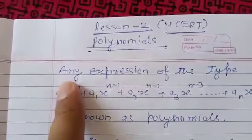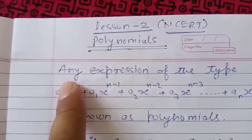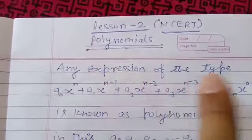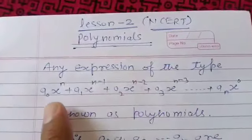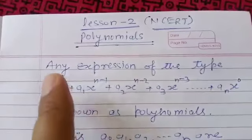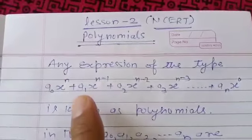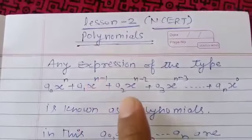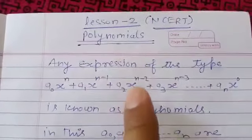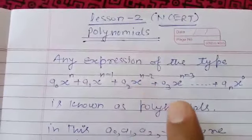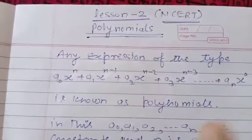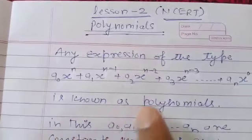So here is the definition of polynomial. Any expression of the type a₀x^n + a₁x^(n-1) + a₂x^(n-2) and so on is known as polynomials.